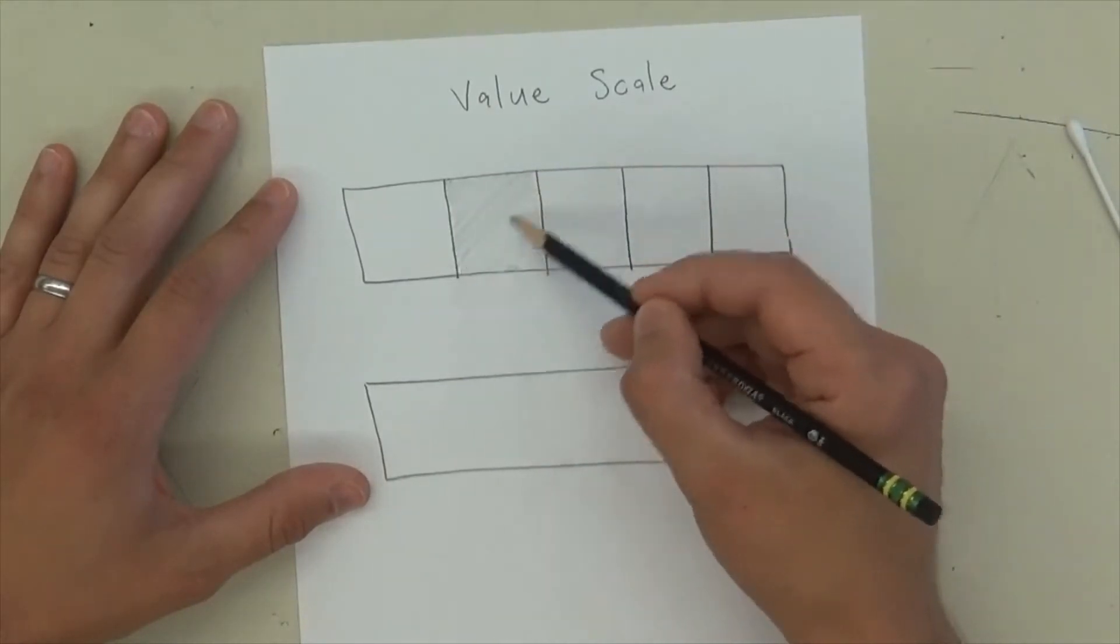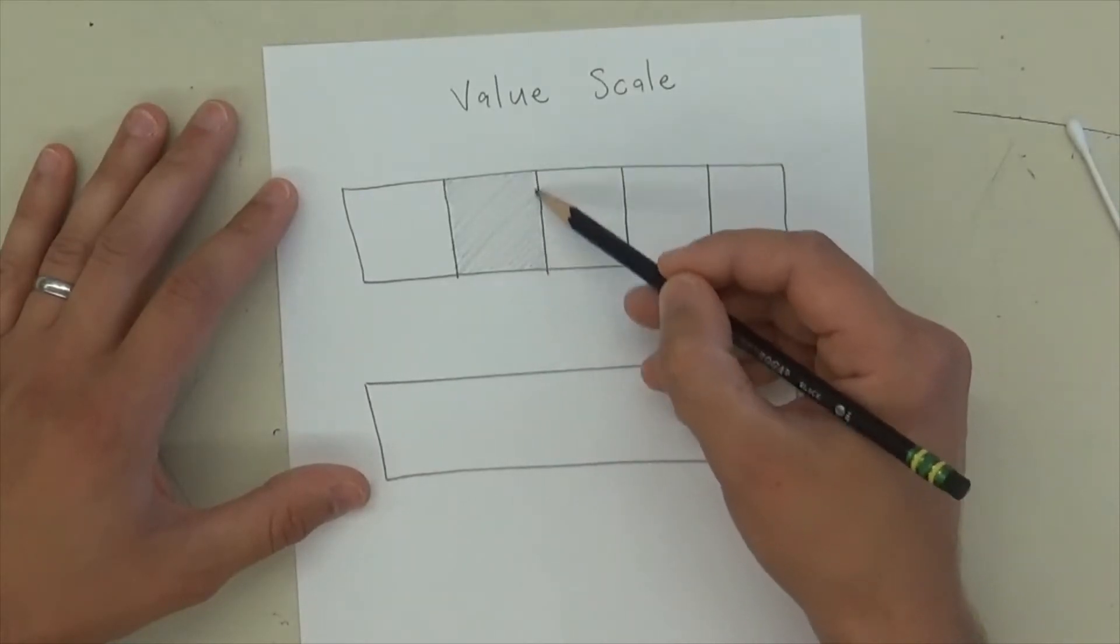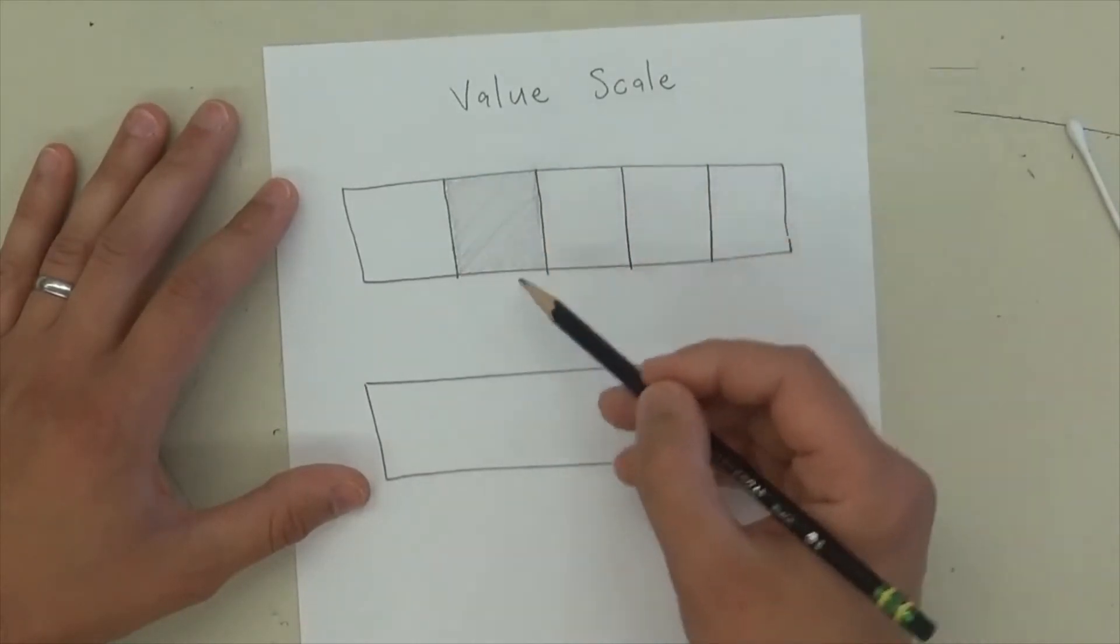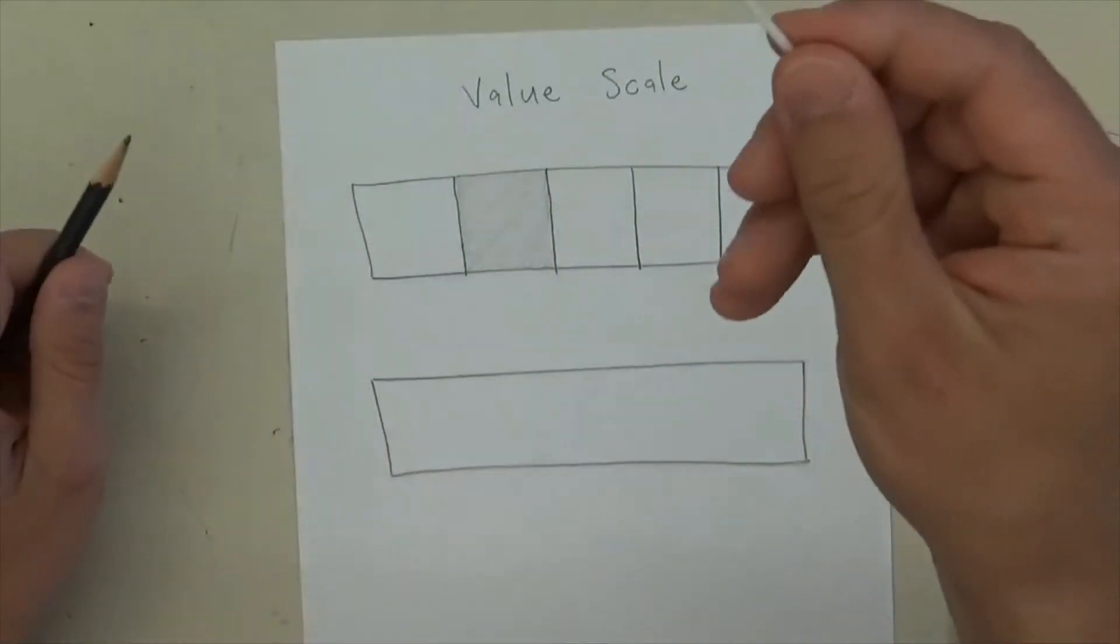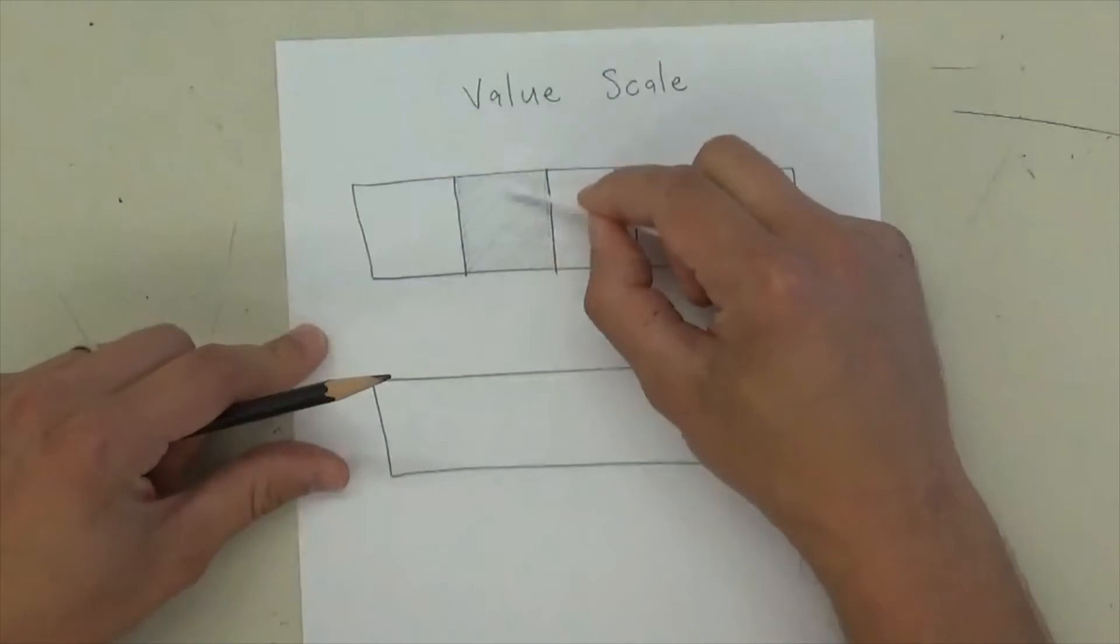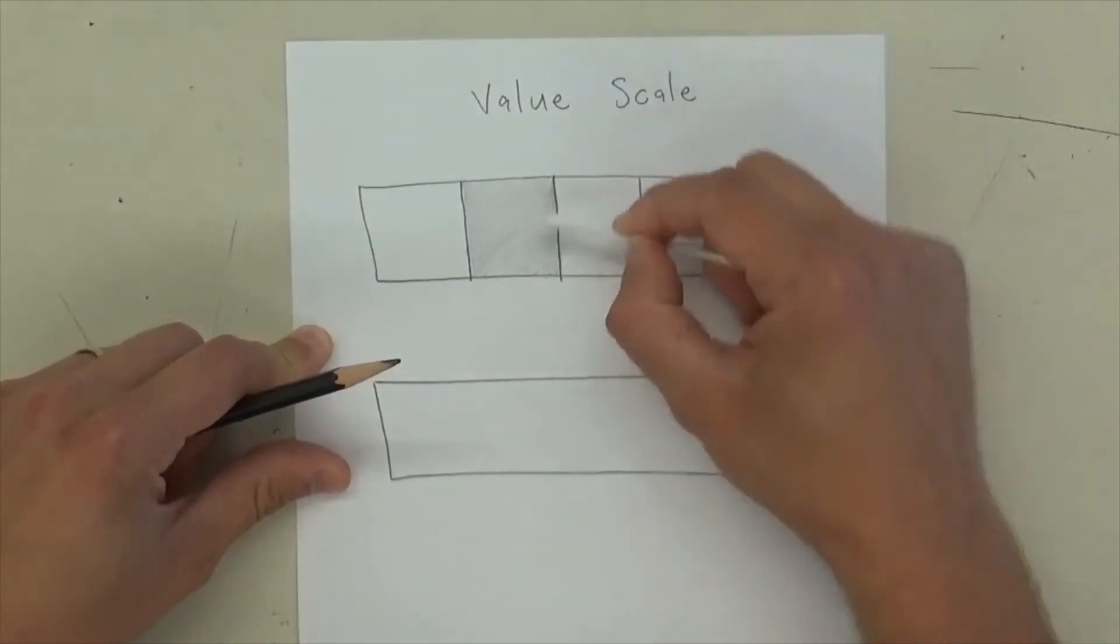just gently. And I'm going to move my pencil back and forth, and just make that first box, or I mean the second box, light gray, just like that. And then, to get rid of the lines, you can take your Q-tip and just rub it back and forth,